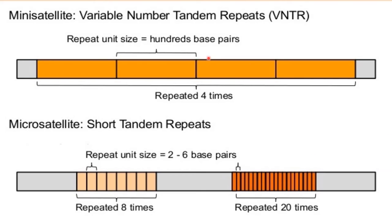In this diagram we can clearly understand the difference between minisatellites and microsatellites. The minisatellite, also called variable number tandem repeat (VNTR), consists of a repeat unit size of 100 base pairs repeated four times. In contrast, the microsatellite, also called short tandem repeat or simple sequence repeat, consists of a repeat unit size of two to six base pairs.